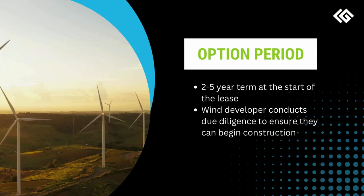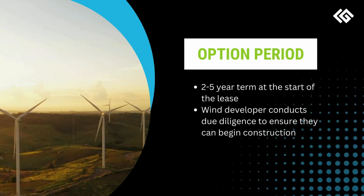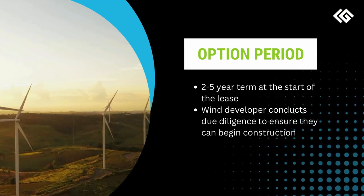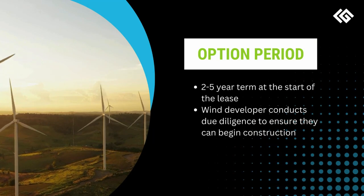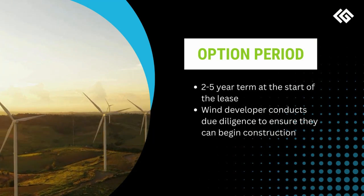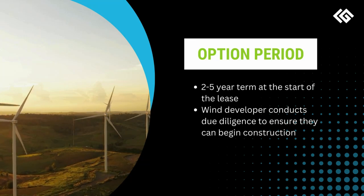Wind leases start with what is called the option period, which is the two to five year term before the turbines are actually placed on the land, during which the wind developer conducts due diligence and gets the proper permits to ensure that they can begin construction.